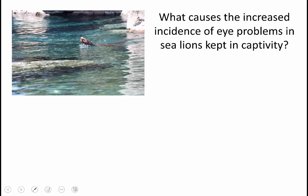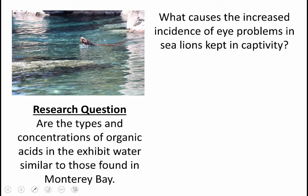Let's look at another example briefly: Sea Lion Cove at the Fresno Chaffee Zoo. Zookeepers are interested in what causes increased incidence of eye problems in sea lions in their exhibit — it's typical of other zoos around the country that they see higher levels of eye problems than in animals in the wild. We might look at types and concentrations of organic acids in the exhibit water and see if they're similar to the ocean. This would be a case where we don't have a prediction — we're trying to describe what's present. The same approach could be applied to other chemicals, light levels at different depths, or differences in feeding styles — all without a prediction, describing what's different between zoo exhibits and the wild.